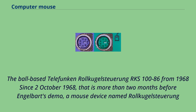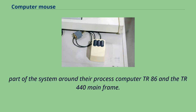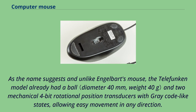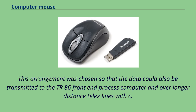Since October 2, 1968 — more than two months before Engelbart's demo — a mouse device named Rollkugel Steueroom was shown in a sales brochure by German company Telefunken as an optional input device for the SIG-100 vector graphics terminal, part of their TR86 process computer and TR440 mainframe system. Unlike Engelbart's mouse, the Telefunken model already had a ball and two mechanical 4-bit rotational position transducers with gray code-like states, allowing easy movement in any direction. The bits remained stable for at least two successive states to relax bouncing requirements.